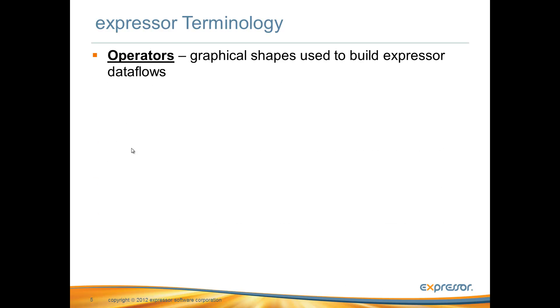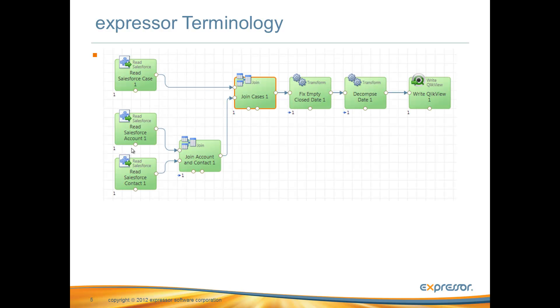Below will appear some basic definitions of the terminology I will be using to better prepare you for the content demonstrated in this video. The first term is operators. Operators are the icon-like shapes used when building Expressor data flows. They consist of read, write, transform, and many others. You connect them to other operators to control the flow of data, hence the term data flow.